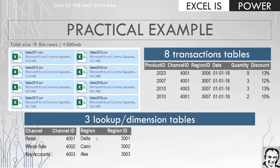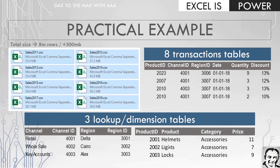We also have a region table containing the name of the region and the region ID, and you can link between the region ID inside the lookup table and the region ID inside the eight transaction tables. Finally, we have the product table containing the product ID, product name, category, and price. You can use the price from the product table with the quantity and discount to calculate the revenue for each transaction.